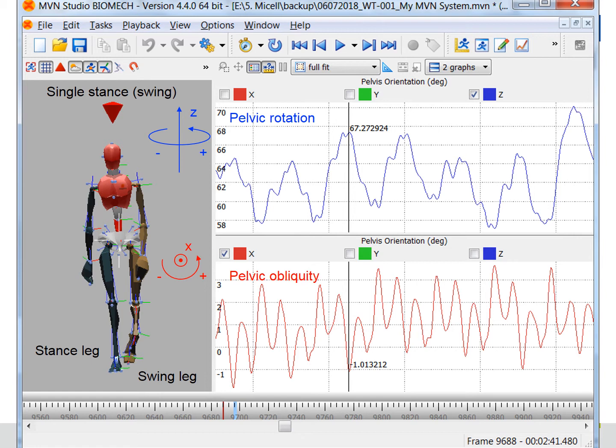This slide shows the graph when toe-off of the brown leg occurs. The pelvis is rotated, the right hip is ahead, and the right hip is higher than the left hip.